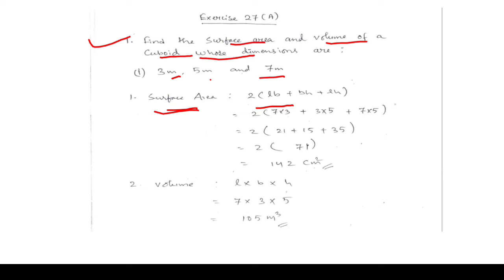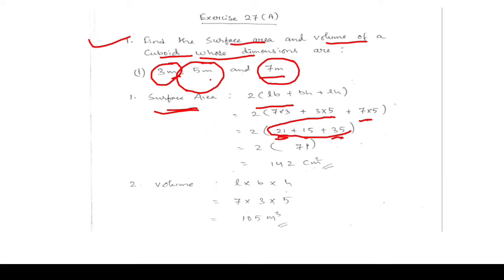Please copy down the formulas in your mathematics copy. Length is 7 m (highest), height is 5 m, and breadth is 3 m (lowest). Substituting: 2(7×3 + 3×5 + 7×5) = 2(21 + 15 + 35) = 2 × 71 = 142 m². For volume: 7 × 3 × 5 = 105 m³.